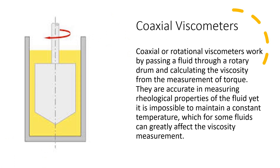Next, we're going to look at coaxial viscometers, which are rotational viscometers. They work by passing a fluid through a rotary drum and calculating the viscosity from the measurement of the torque. They're accurate in measuring biological properties of the fluid, yet it's impossible to maintain a constant temperature, which can greatly affect the viscosity measurement, since some fluids are highly viscous at low temperatures and low in viscosity at high temperatures.